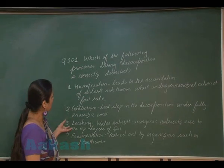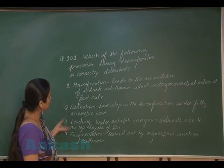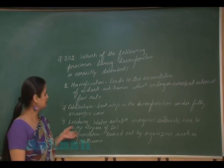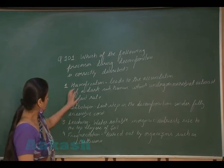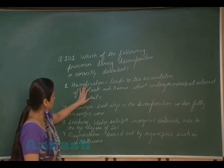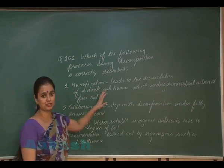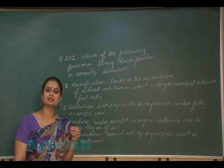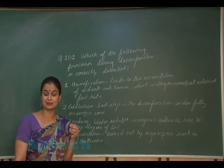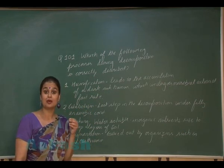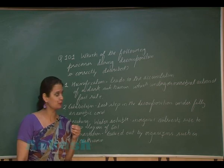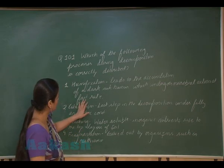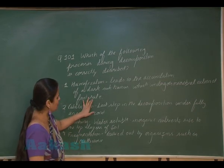In this question we have to choose the correct option with respect to decomposition. The first option is humification — humification results in the formation of humus which is resistant to decomposition, but here it is written fast rate of decomposition, so this option is wrong.